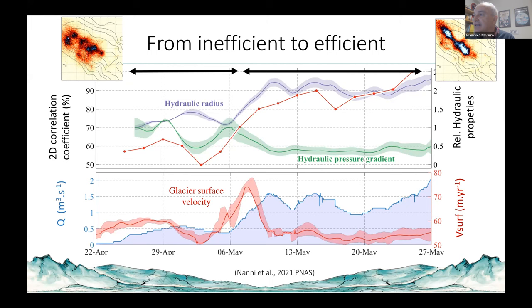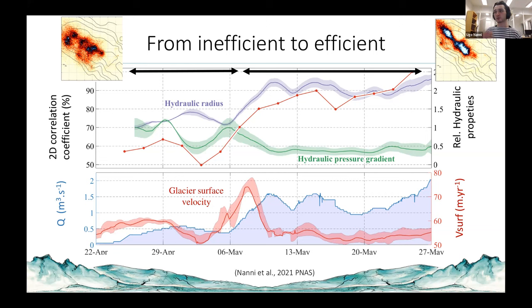Could this method be applied on any glacier? If you install a dense seismic array, yes. The limitation is the size of the seismic array. For a Greenland glacier with maybe 1,000 meters of ice thickness, we would need a larger aperture because this controls at which depth we can locate the sources. The resolution will be smaller, but since the subglacial system in Greenland is much bigger than in the Alps where we only have a few cubic meters per second, this would yield a similar relative resolution.